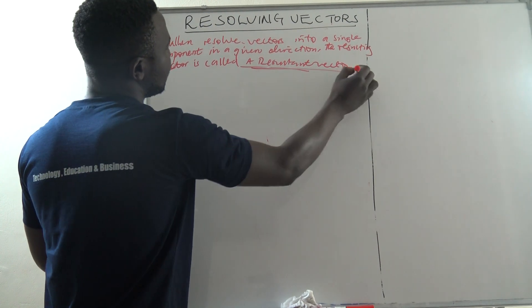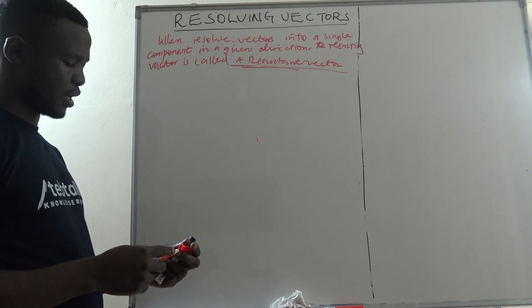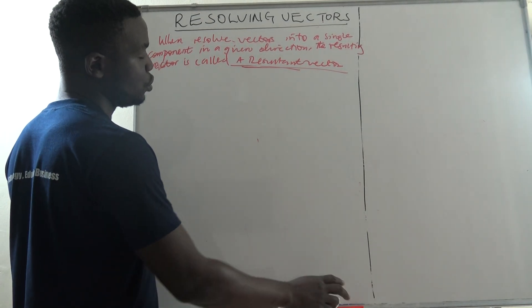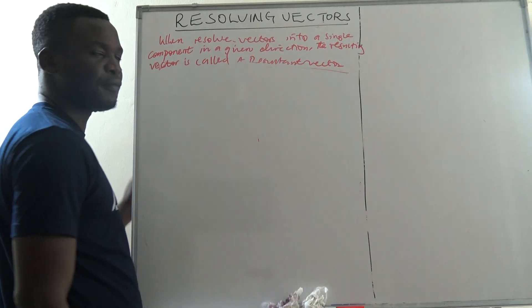A resultant vector is a single vector that has the same effect as two or more vectors.